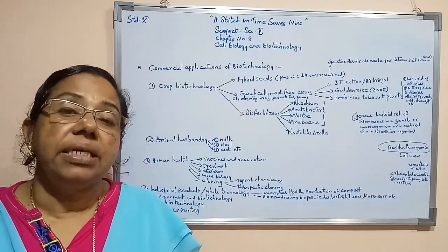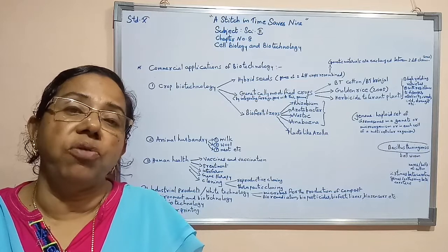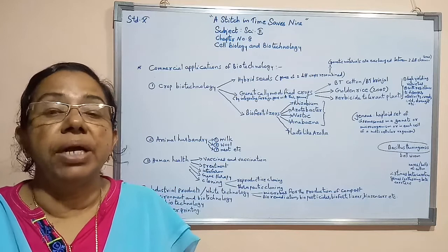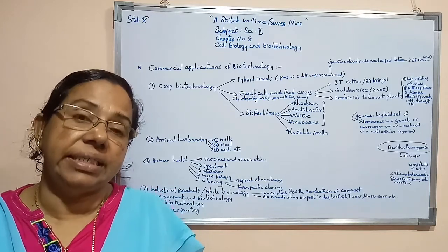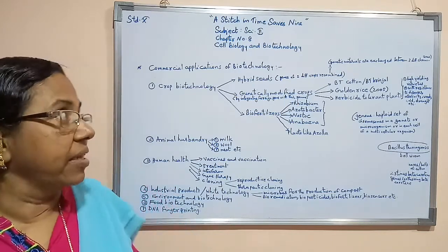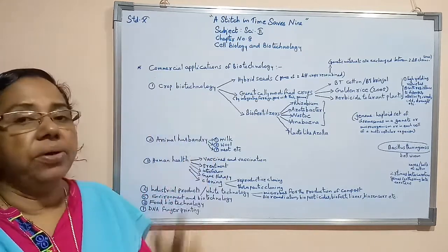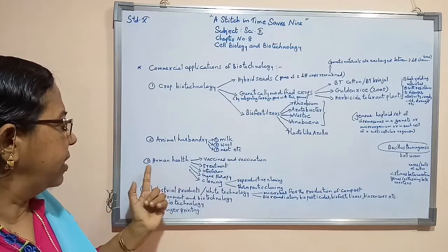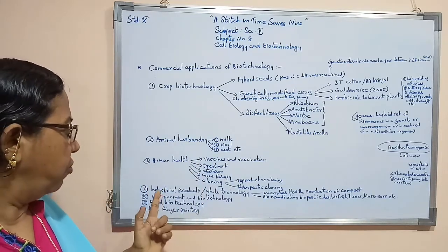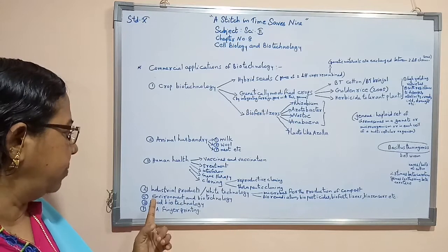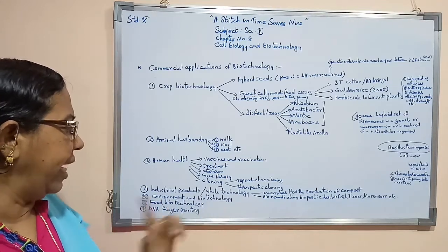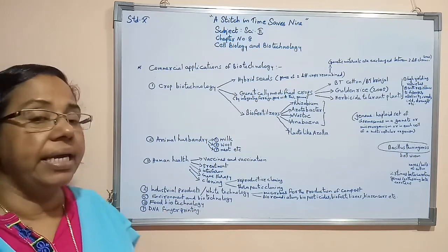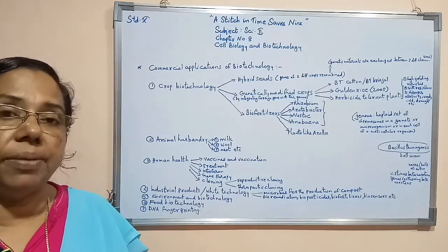What are the various commercial applications of biotechnology? There are different uses of biotechnology in industries: first, crop biotechnology; second, animal husbandry; third, human health; fourth, industrial products and white technology; fifth, environment and biotechnology; sixth, food biotechnology; seventh, DNA fingerprinting.